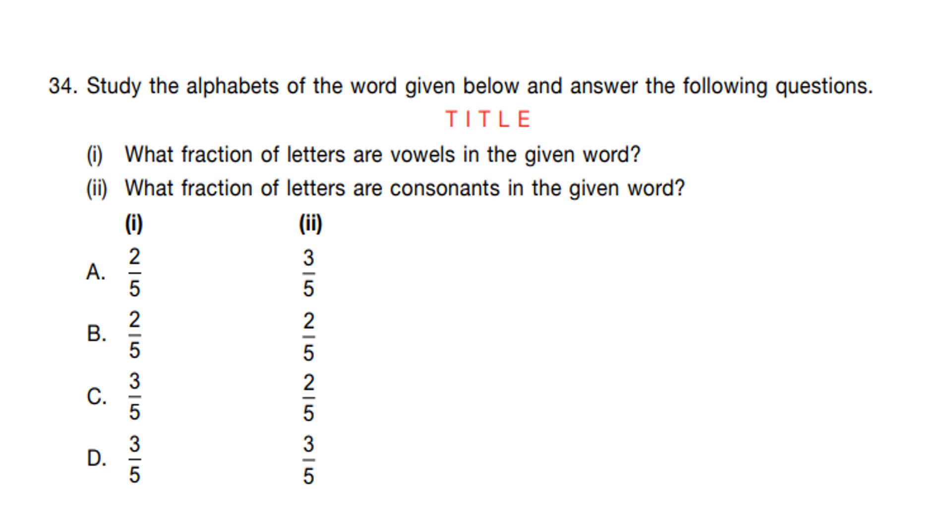Question number 34. Study the alphabets of the word given below and answer the following questions. The word TITLE is given. What fraction of letters are vowels in the given word? Vowels are A, E, I, O, U. These alphabets are called vowels. So in this word, I and E are vowels. And total of alphabets in the word is 5 and 2 are vowels. So fraction of vowels is 2/5. So A and D can be our answer.